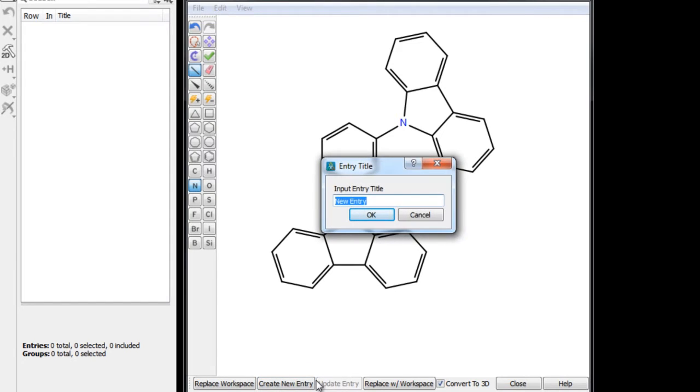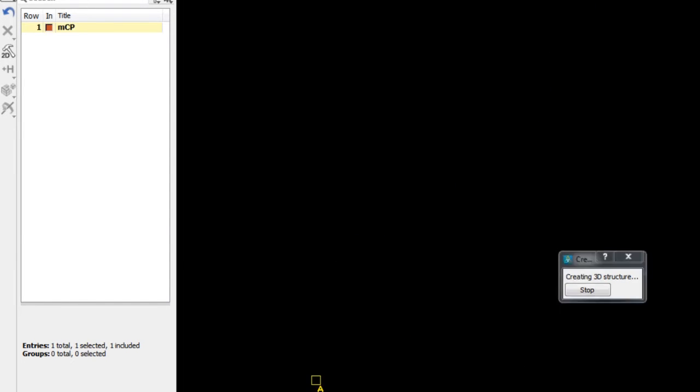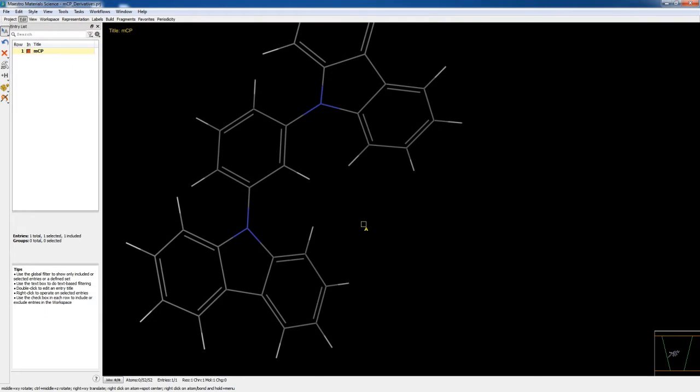Click create new entry and we'll call it MCP. Now we have the core scaffold MCP in the workspace.